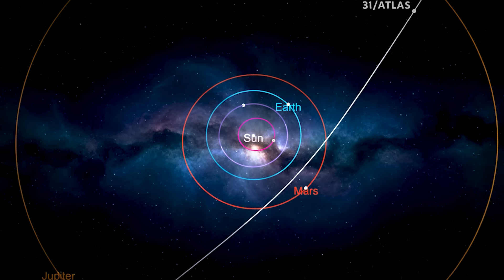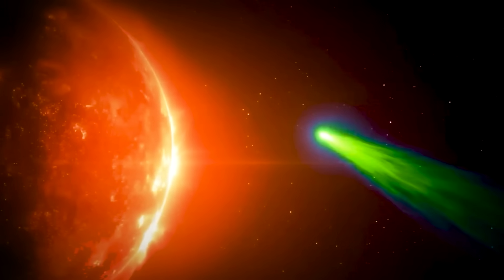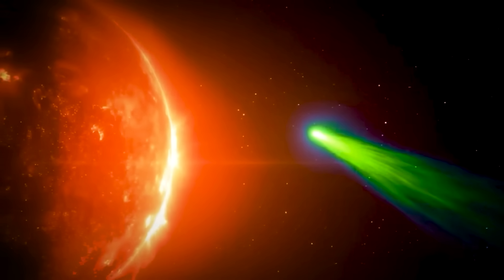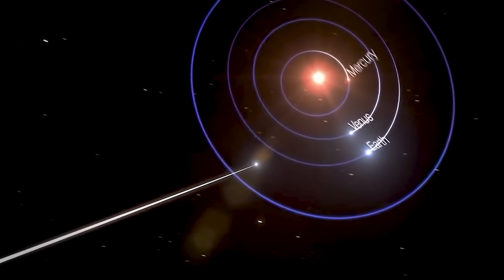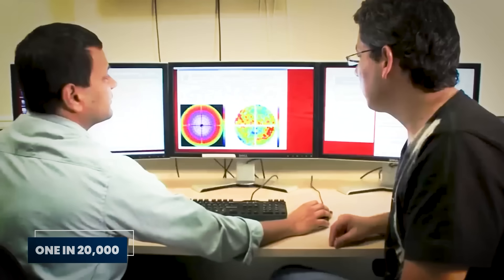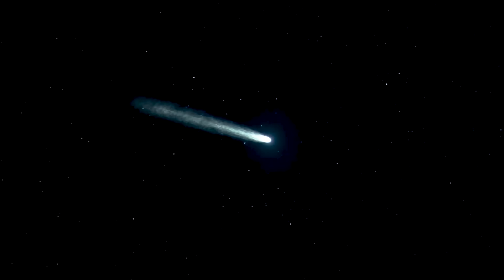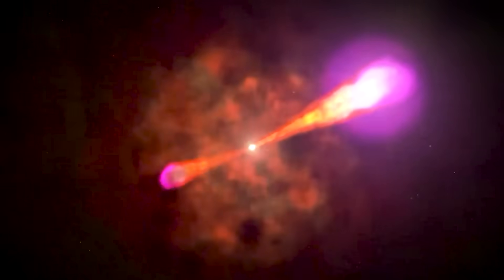The trajectory was too perfect. Instead of tumbling through space on a random path like every other interstellar object we've seen, 3I Atlas was traveling along a route that would take it remarkably close to Mars, Venus, and Jupiter, almost like it was following a carefully planned itinerary. Harvard astrophysicist Avi Loeb calculated the probability of this alignment happening by pure chance. Less than 1 in 20,000. To put that in perspective, you're more likely to be struck by lightning twice in the same year than to see a random space rock arrive with this kind of precision. Yet that was just the beginning of the anomalies.